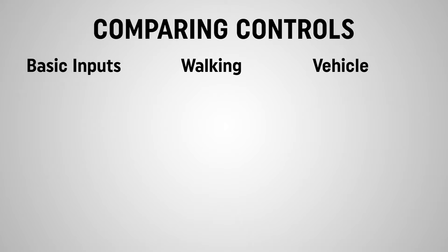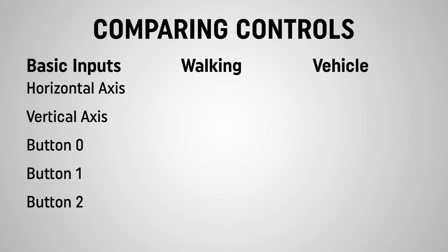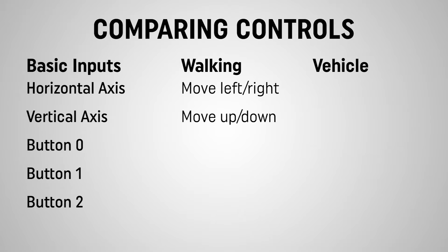In our character controller we have two axes — a horizontal axis and a vertical axis — as well as three buttons indexed as 0, 1, and 2. For our walking controller, our horizontal axis moves the character left and right, our vertical axis moves the character up and down, button 0 makes the character jump, button 1 makes the character interact with other objects, and button 2 makes the character attack.